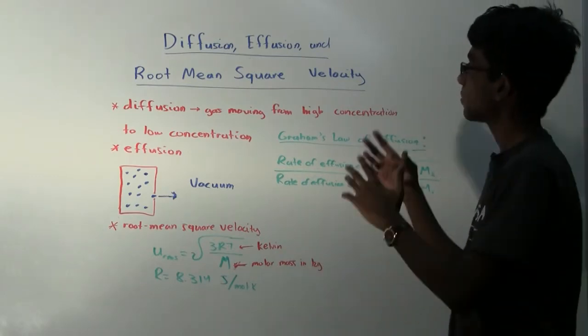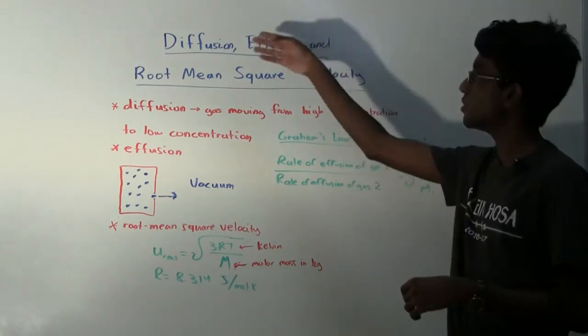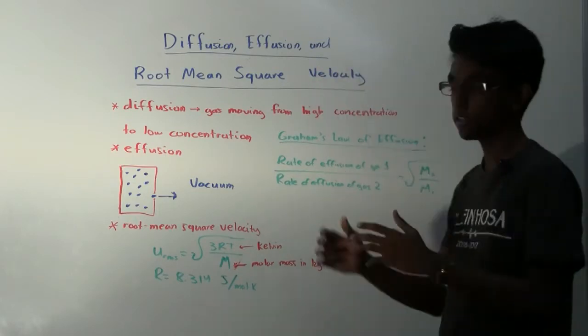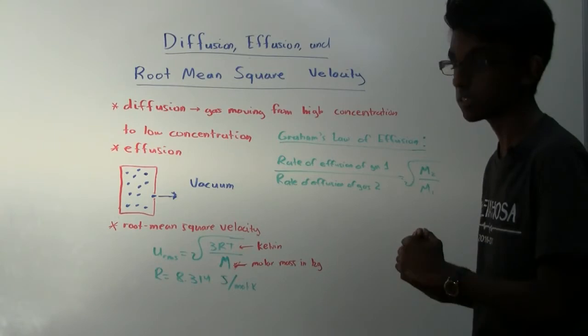In this video, I'm going to go ahead and talk about three properties of gases: diffusion, effusion, and root mean square velocity. And these are all related because they talk about how fast a gas moves.